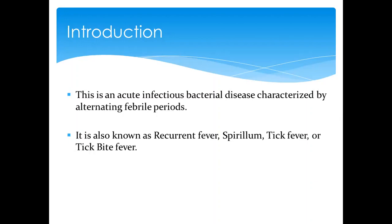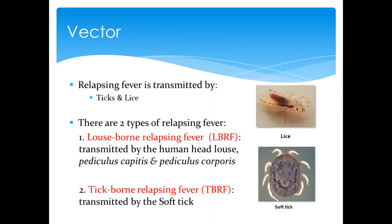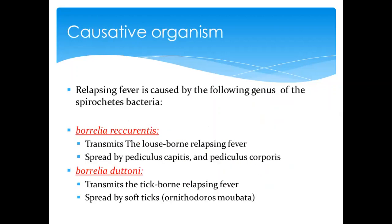Other names include tick fever, especially for the tick-borne form, spirillum fever, and recurrent fever, but what we really use is relapsing fever. For the vector, we have two main types: ticks that confer tick-borne relapsing fever, and lice that give us louse-borne relapsing fever. The lice we're talking about include Pediculus capitis found on the head and on the body. For ticks, the soft tick is the one normally associated with transmitting this disease.